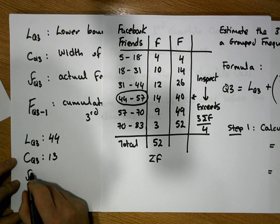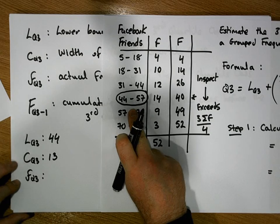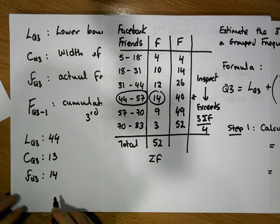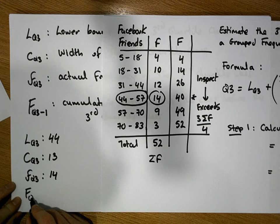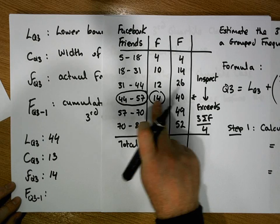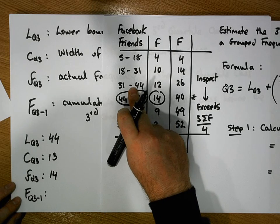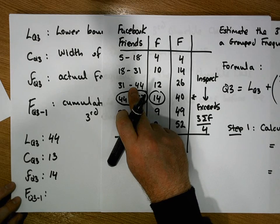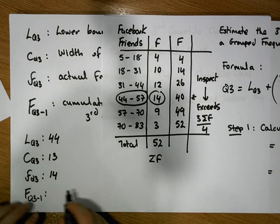Small f_q3 is the actual frequency of the third quartile class, which is 14. Capital F_(q3−1) is the cumulative frequency of the class before the third quartile class. The class before the third quartile class is 31 to 44, and its cumulative frequency is 26.